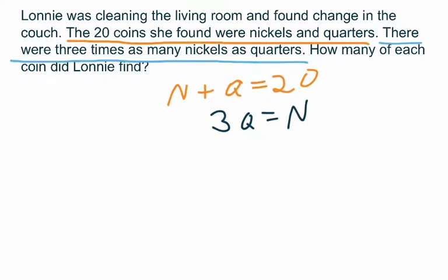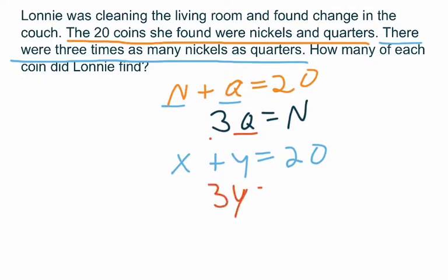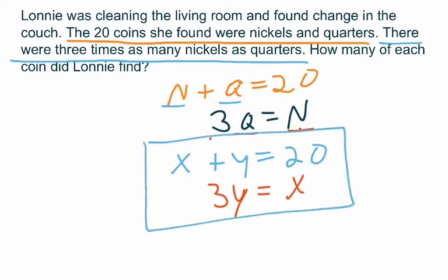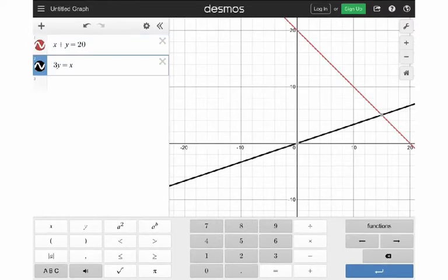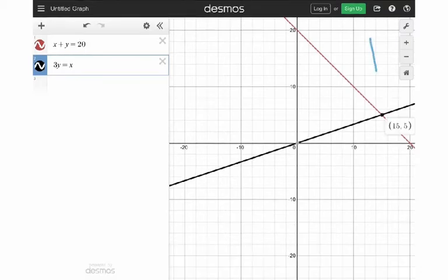Now let's put it in X/Y variable form. We have X plus Y equals 20 for the first equation. For the second, Q represents the Y value and N represents the X value, so 3Y equals X. We've got a system we can go graph. The key is just getting the equations and then going over to Desmos. Putting in X plus Y equals 20 gives a red line hitting at 20 and 20. Putting in 3Y equals X gives the second line, and we can see where the intersection is — at 15 and 5.